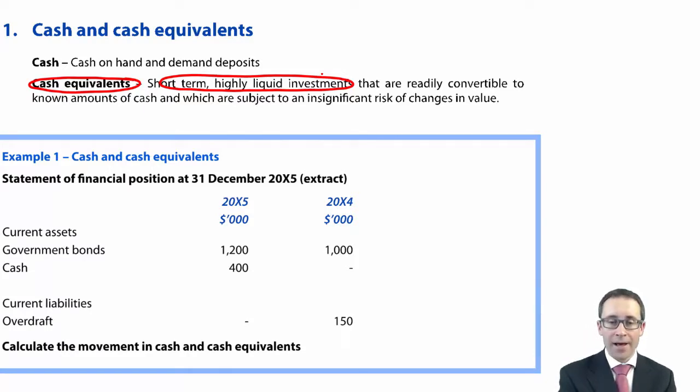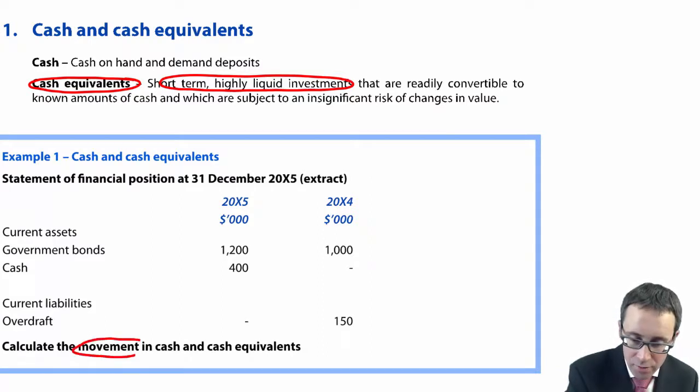So, what have we got? Let's look at the example. Example number one just there at the bottom. It says, calculate the movements in cash and cash equivalents. So, what you've got, we're going from, sorry, X4 to X5.